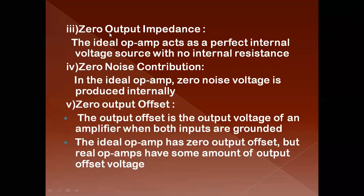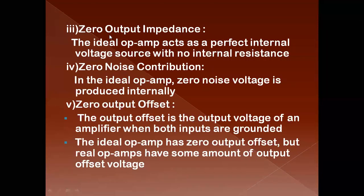The third ideal characteristic is zero output impedance. The fourth is zero noise contribution — ideally the op-amp has no noise. The fifth is zero DC output offset voltage — meaning when both inputs are grounded, the output should ideally be zero. The sixth characteristic is infinite bandwidth, meaning the op-amp can amplify signals from DC (0 Hz) up to infinite frequency.